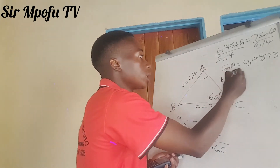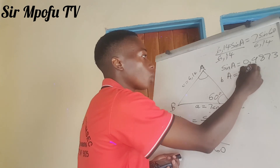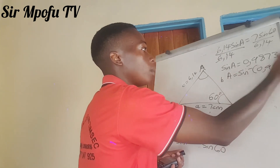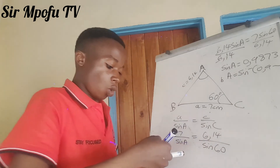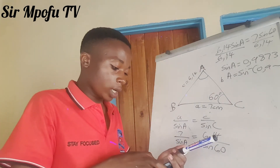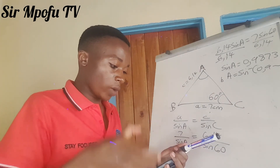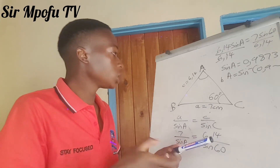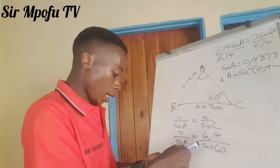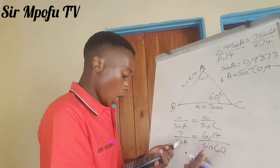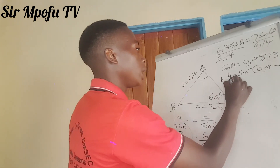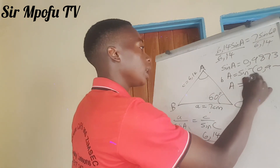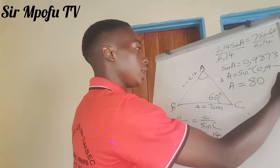Angle A equals inverse sine of 0.9873 and so on. When sine goes to the other side, it becomes inverse sine. So if you still have your answer on the calculator, you can punch second function, then sine to get inverse sine, then press equals. You are going to get A equal to 8.888...